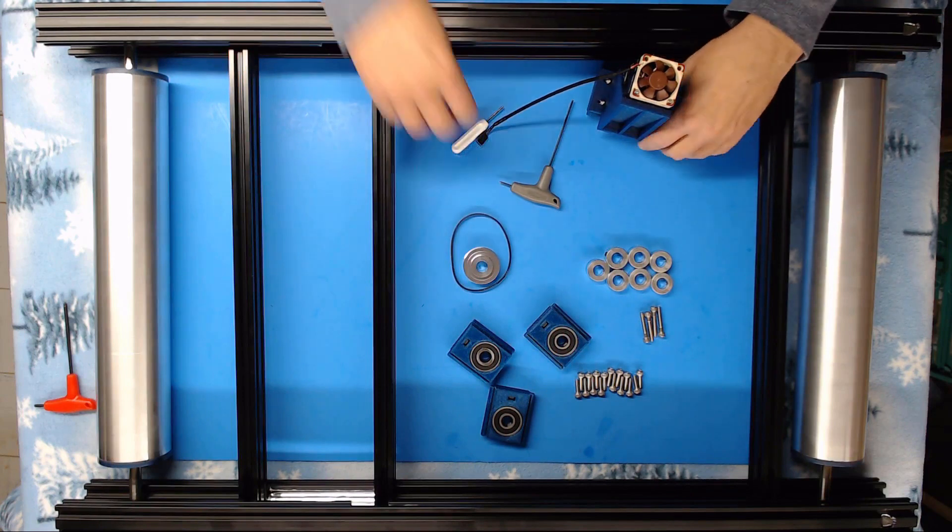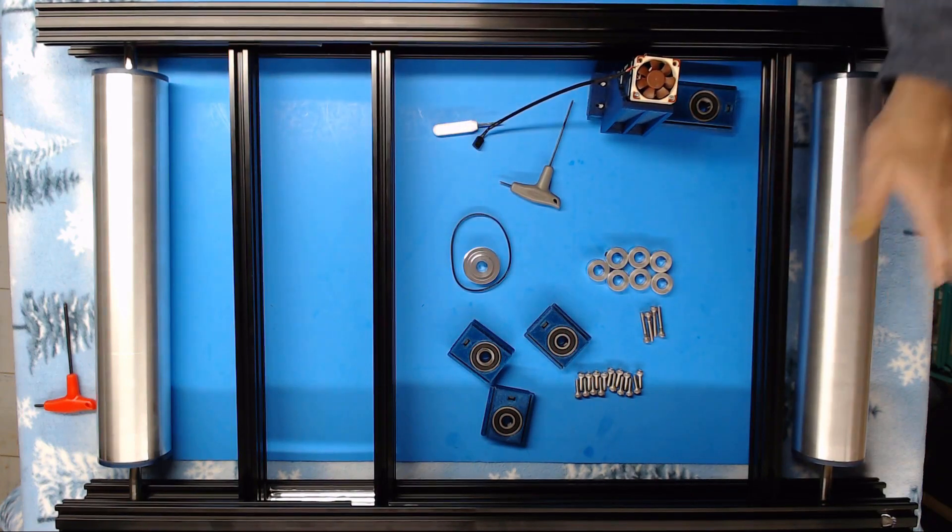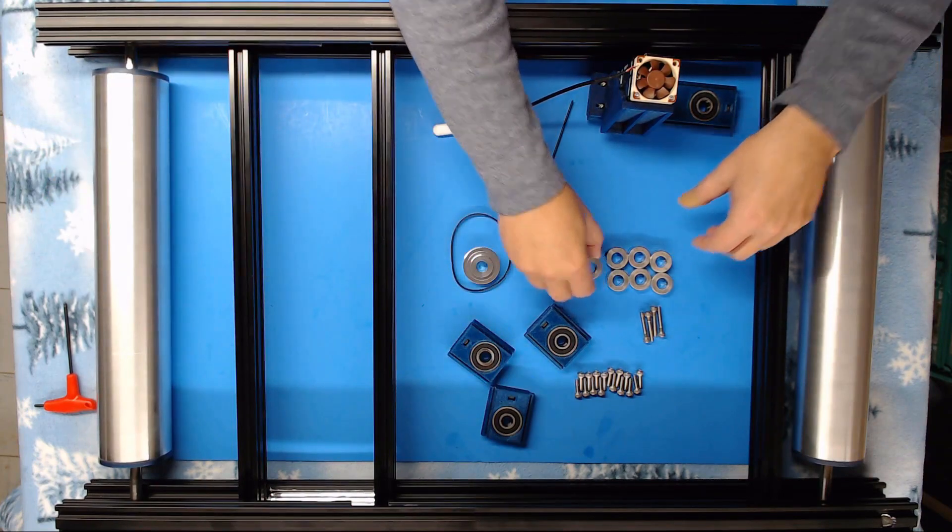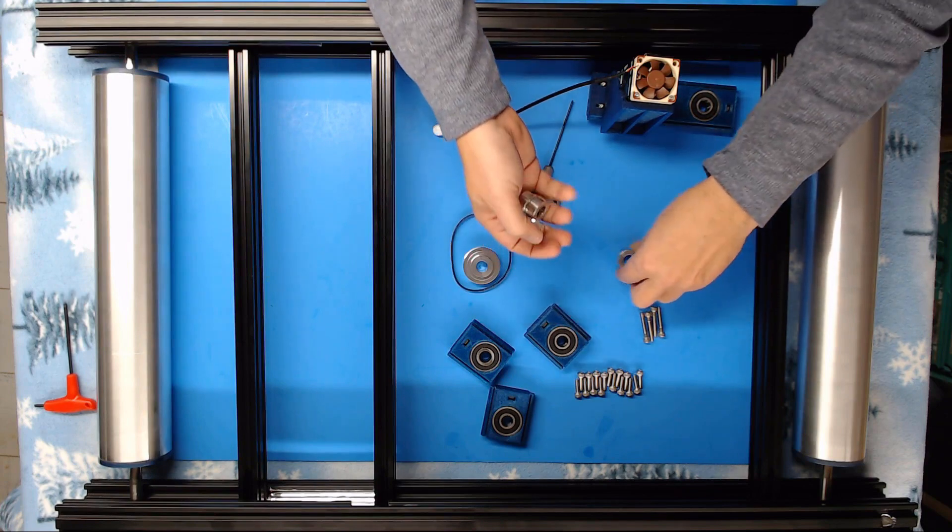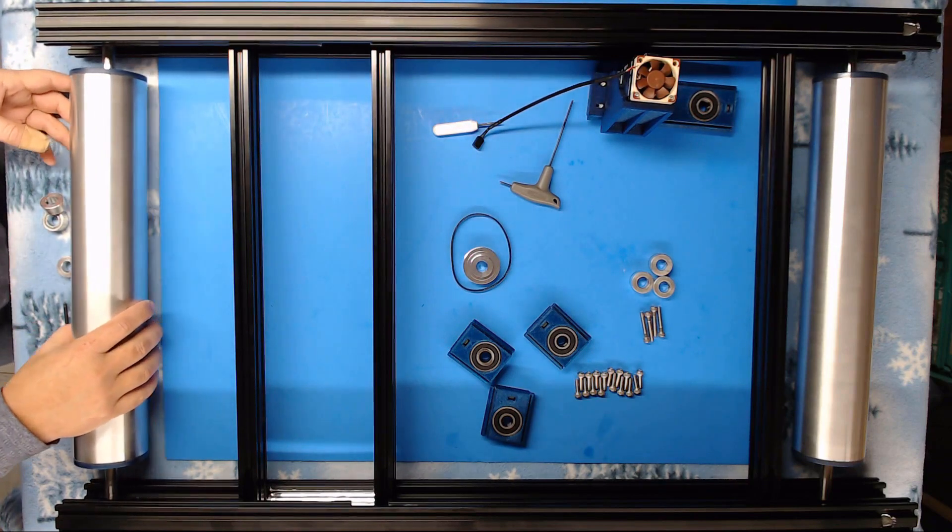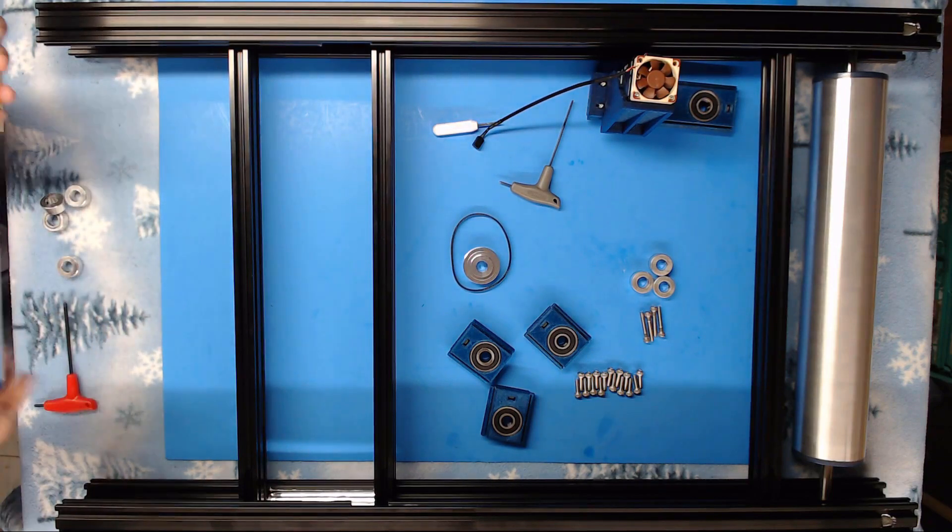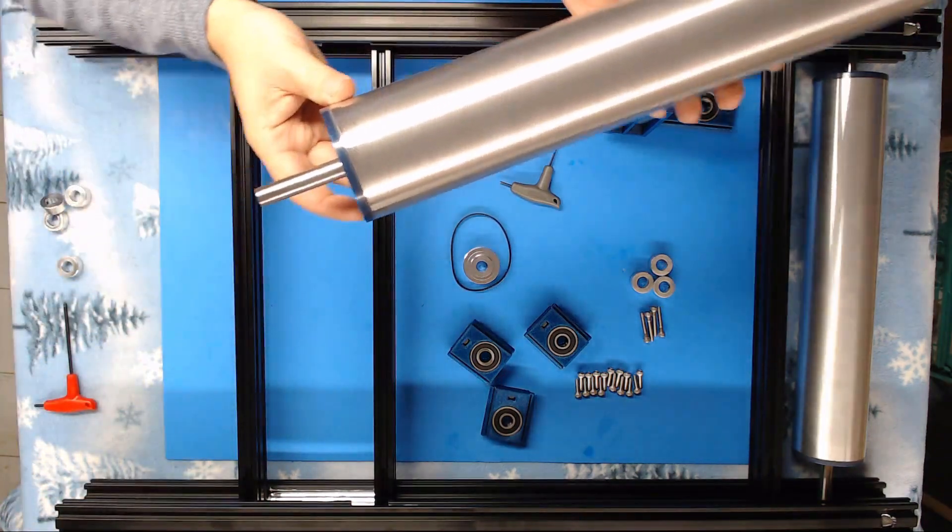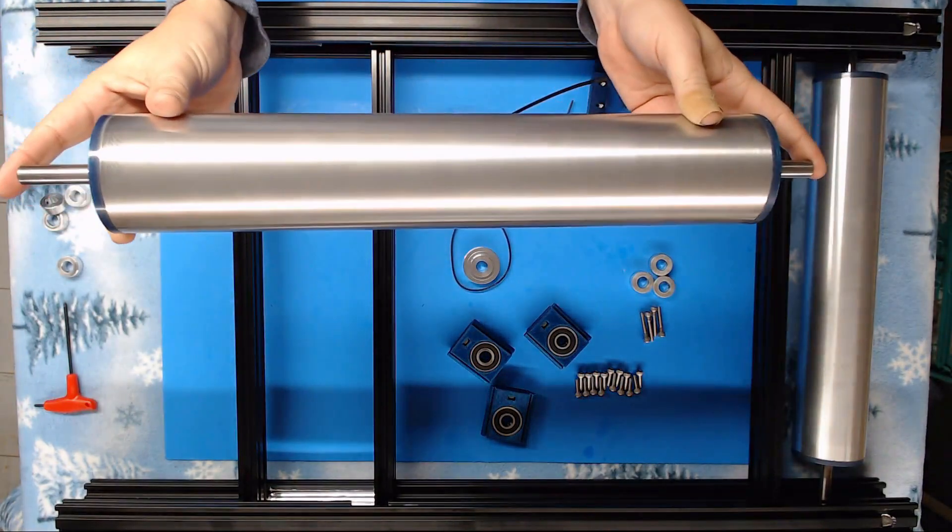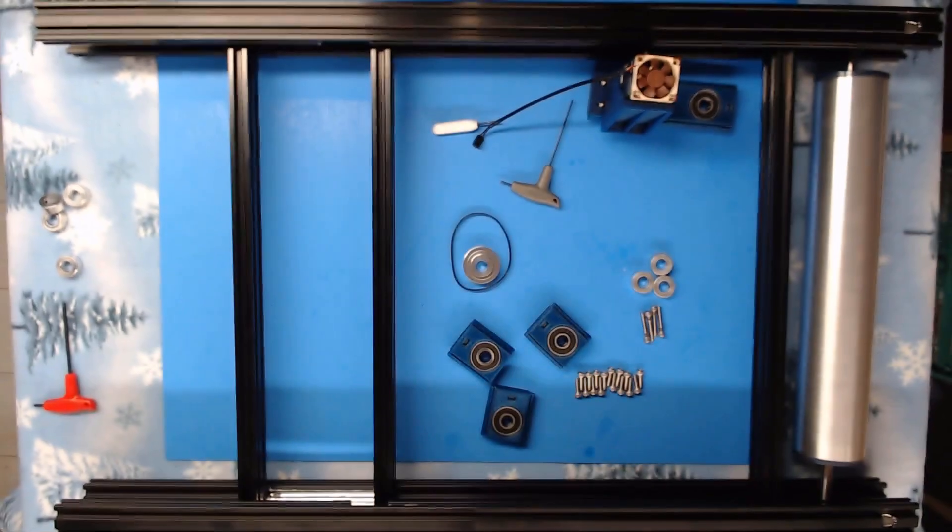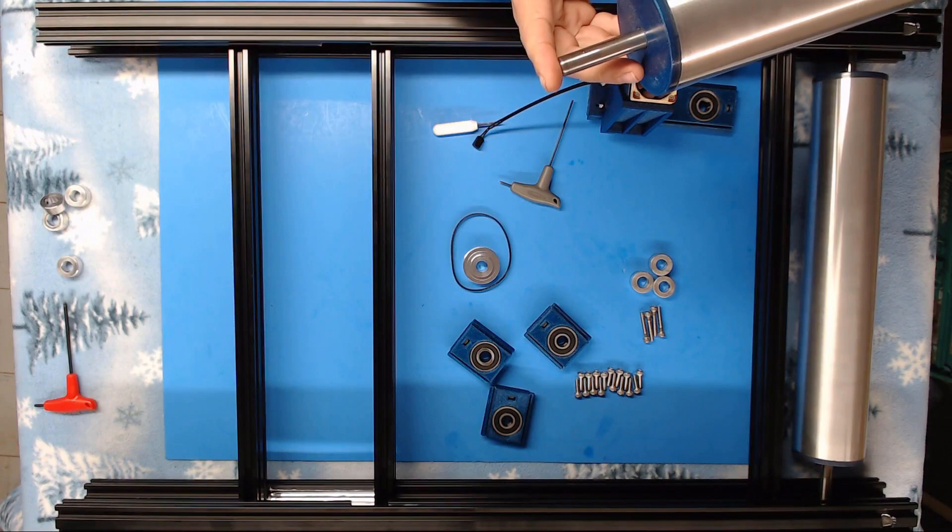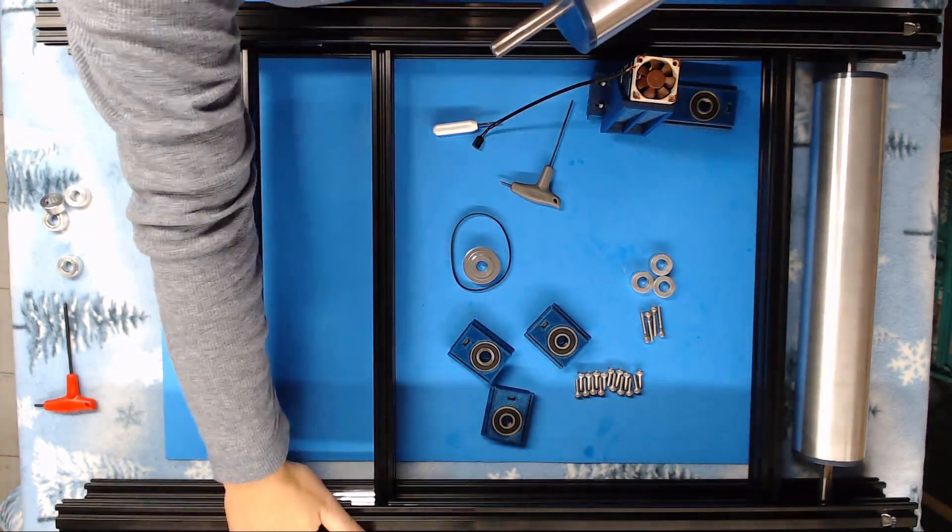All right now the next thing we need to do is start installing our rollers. So we're going to start with the easy end first. We will need four shaft collars. Put on our roller. Now you've got two ends to your roller. One has just a little more shaft length on it than the other end.